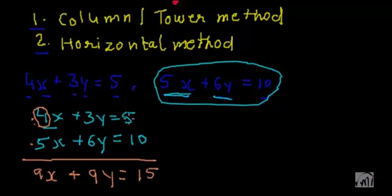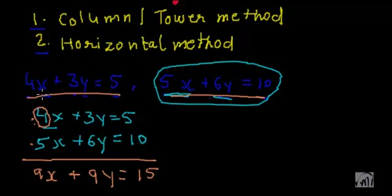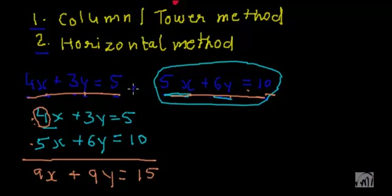So this was the tower method for the first example, where both equations have the same order of variables. In the first equation the term with x comes first, then the term with y, then the equal to sign, then the constant. The second equation follows the same order. So we just wrote the first equation and the second equation directly below it and added them as they were.